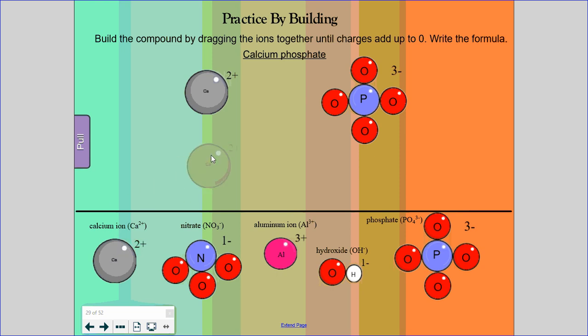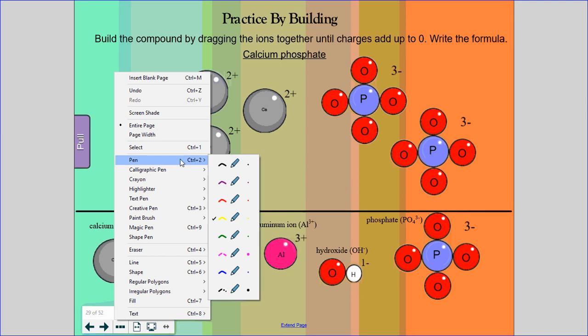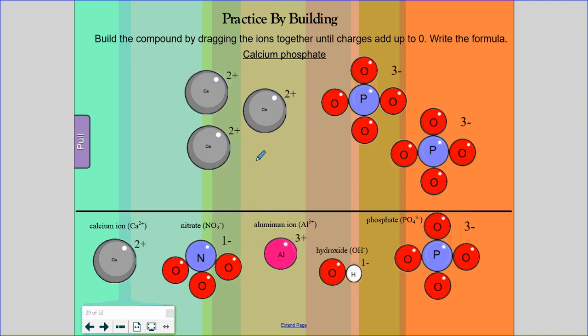Well, if I throw another calcium in, now I have a plus four charge and a negative three charge. It still doesn't work. Well, let's put another phosphate in here. Okay, now I've got plus four and negative six. I can fix this now by putting another calcium here. And that is what we needed to do. We literally can see that we build our compound, pardon me, not a molecule. This is a formula unit of calcium phosphate that we need three calciums for every two phosphates. So, we write it thusly, Ca3(PO4)2.